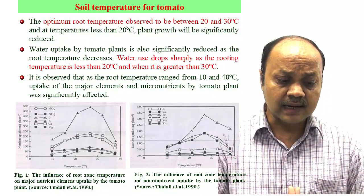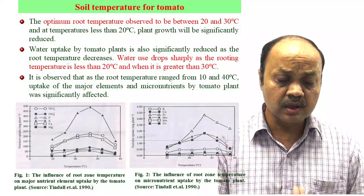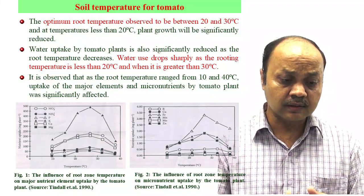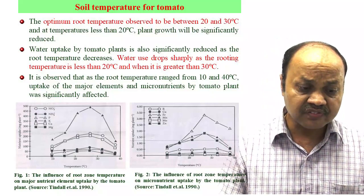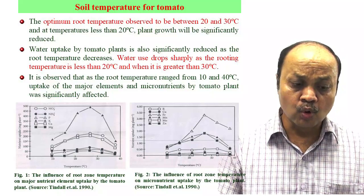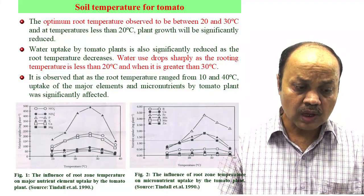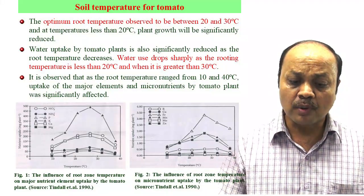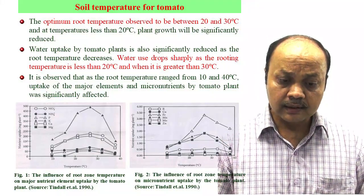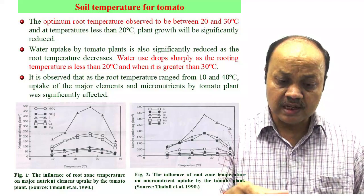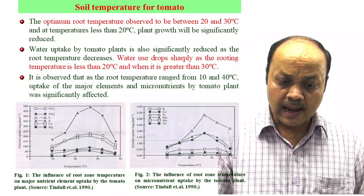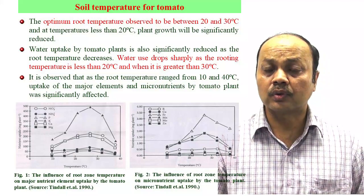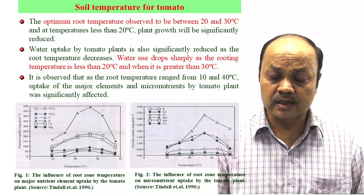The influence of root zone temperature on major nutrients — nitrate, phosphorus, potassium, and magnesium — can be seen in figure 1. Soil temperature affects potassium most significantly, and also affects ammonium, nitrate, and calcium. Similarly, for micronutrients, soil temperature majorly affects iron absorption, followed by zinc and manganese. For tomato, 20 to 30 degrees C is the optimum range for soil temperature. If it drops below this, nutrient and water absorption are disturbed, which affects metabolic activity. So, apart from air temperature, soil temperature plays a very important role in plant growth.